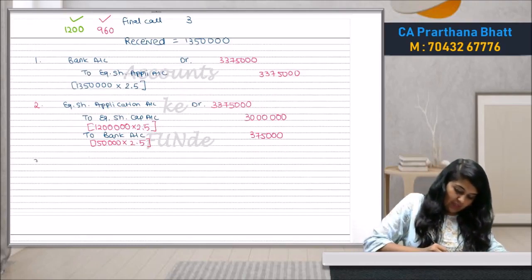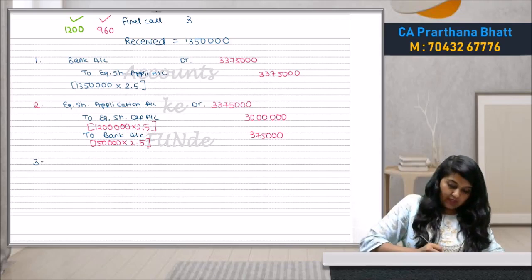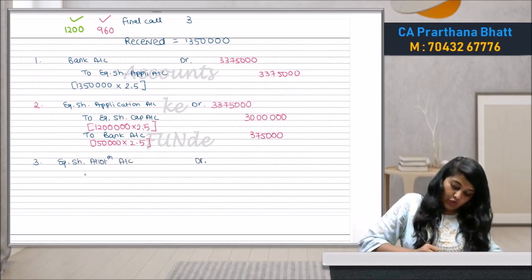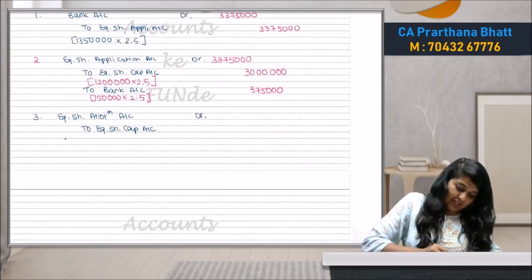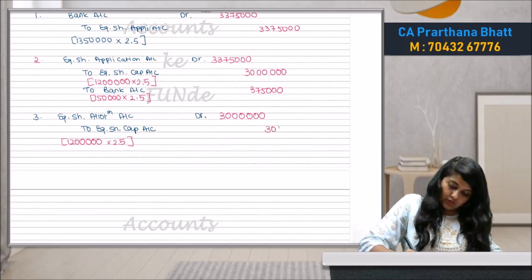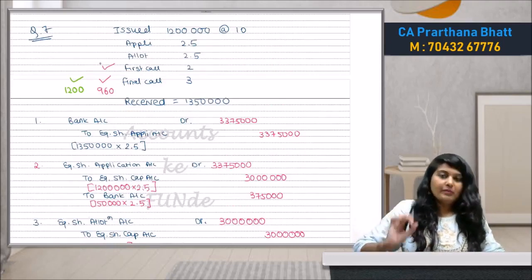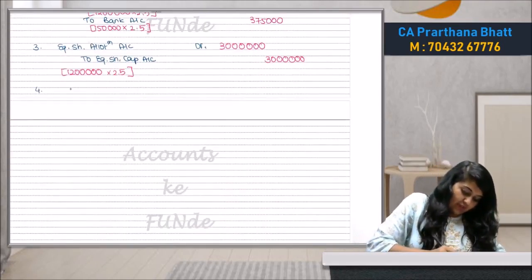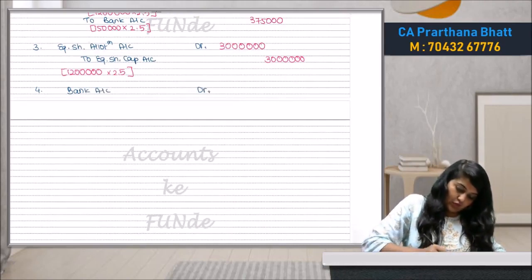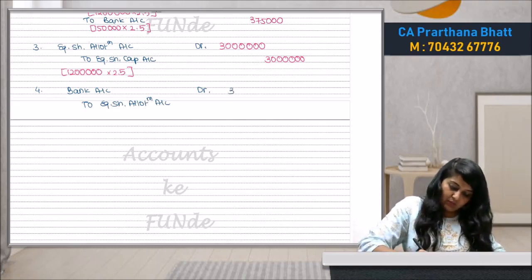Third entry — allotment due: Equity Share Allotment Account debit to Equity Share Capital Account — 12,00,000 × ₹2.5 = ₹30,00,000. There is no problem in allotment, all money was received. Bank receipt entry: Bank Account debit to Equity Share Allotment Account — ₹30,00,000.